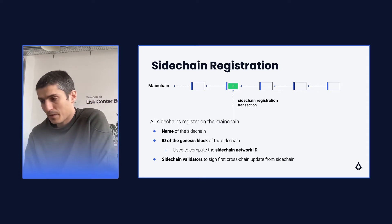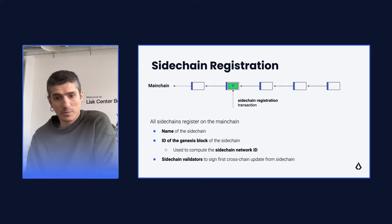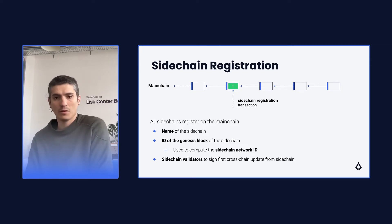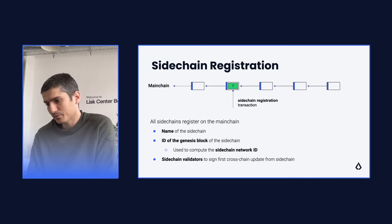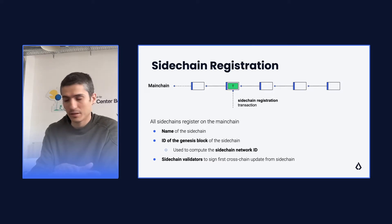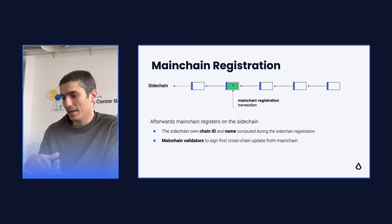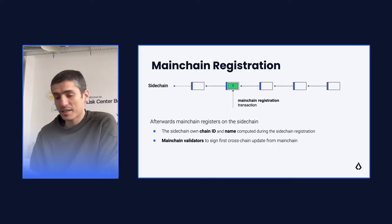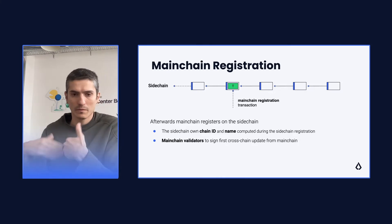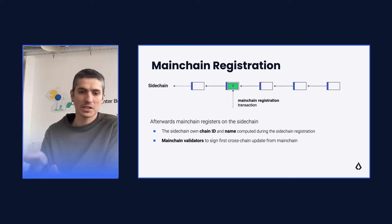The sidechain registration process happens on the mainchain. It's a transaction that sidechain developers can cast on the mainchain. In doing so they set the name of their sidechain, the ID of the genesis block of the sidechain — which is used to compute the sidechain network ID — which is then used to validate certificates from the sidechain, and the first set of sidechain validators that will be used to validate the first update from the sidechain. After this has been done, the mainchain can be registered on the sidechain. This process is symmetric in this sense — the only asymmetrical part is that first sidechains have to register on the mainchain.